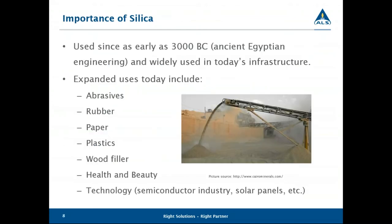Silica has a very important role in our everyday items. We've been using it since as early as 3000 BC during ancient Egypt. Today, it's used in construction, abrasives, rubber — the tire industry uses it for rigidity, strength, and friction — as well as paper, plastics, wood fillers, health and beauty products, and semiconductor manufacturing. It's also used in solar panels; although not the most efficient at converting light to energy, it is the most abundant and helps bring down costs.